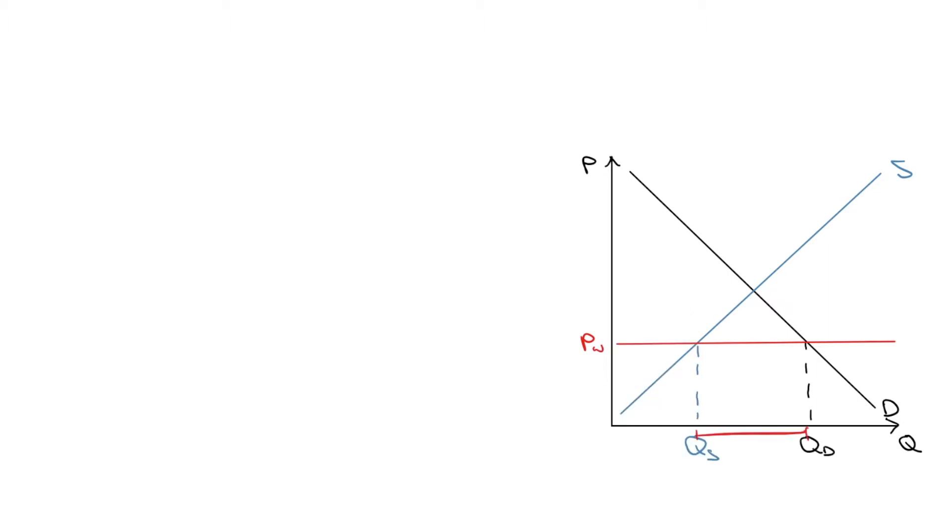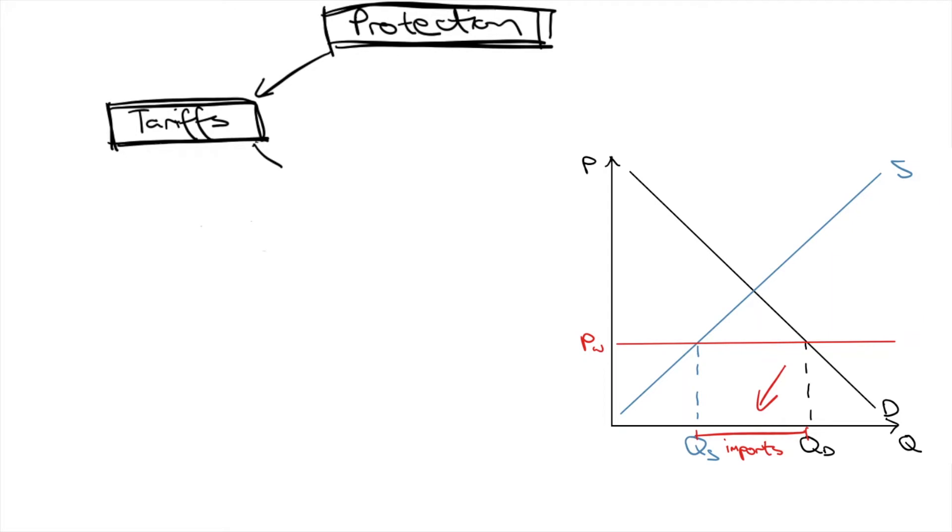This gap between domestic demand and supply is satisfied by imports. Remember this tip, this gap is the amount of imports and this box is how much revenue foreign producers are making from Australia. Protection aims to narrow this import gap so that domestic suppliers can have a larger market share and keep more revenue.